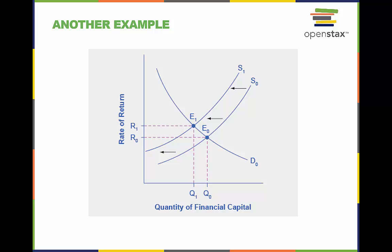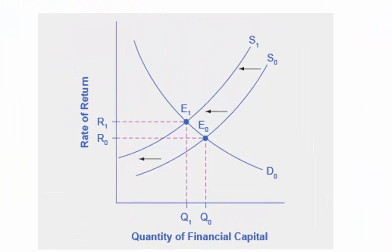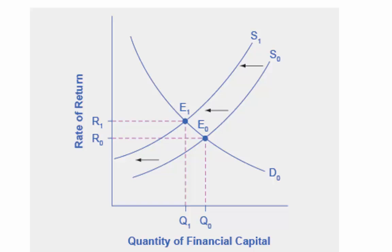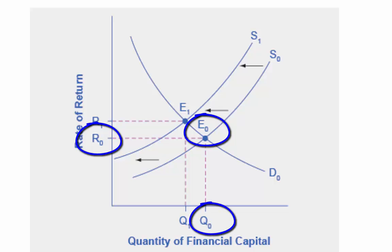This graph shows the demand for financial capital and supply for financial capital into the U.S. financial markets by the foreign sector, before and after the increase of uncertainty regarding U.S. public debt. The original equilibrium, E0, occurs at an equilibrium rate of return at R0 and the equilibrium quantity is Q0.